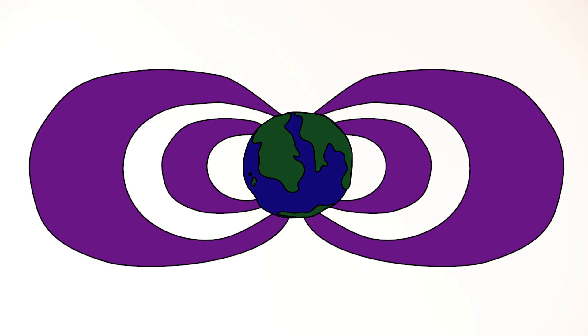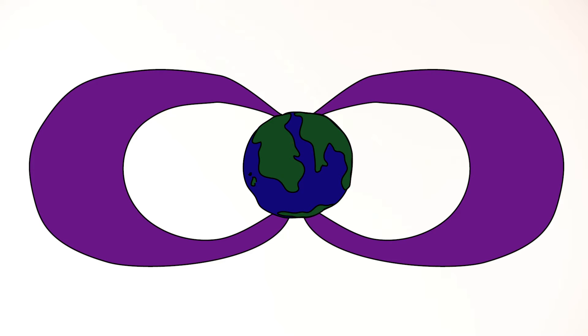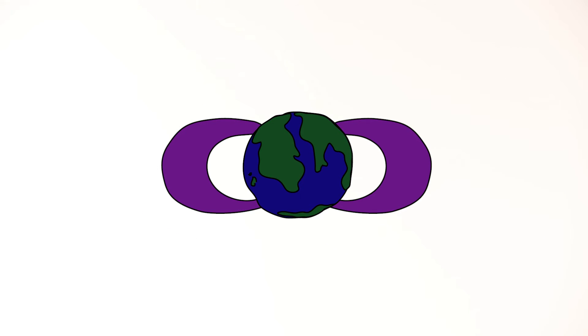It's really changed our whole view of the radiation belts. There are two radiation belts: an outer belt that's very dynamic and very large, and an inner belt that's small and pretty static.